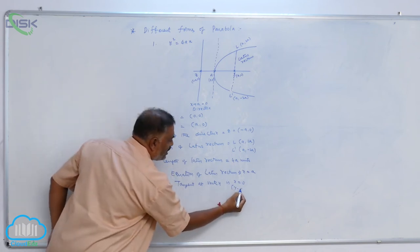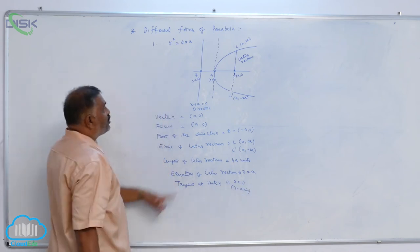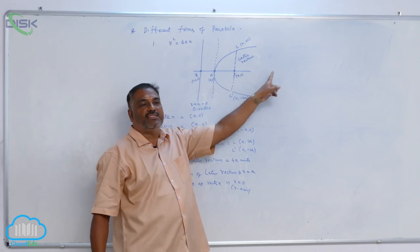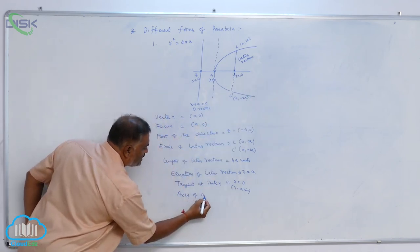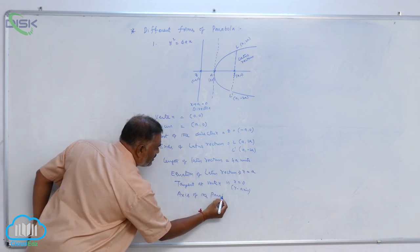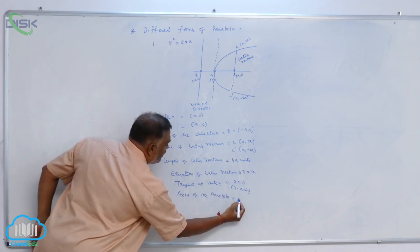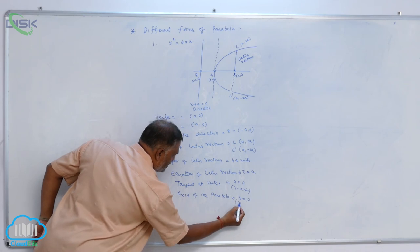This is nothing but what? Y-axis. Of course, this is going to be axis. So axis of the parabola, axis of the parabola is y is equal to zero, that is x-axis.